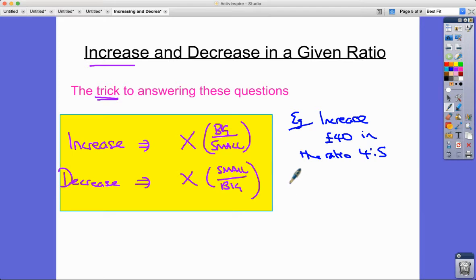All you need to do then is £40 multiplied by big over small, multiplied by 5 over 4 in this case, which is equal to £50.